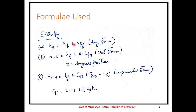Hence, you do not see X in the formula for dry steam. For superheated steam, the formula is HG plus CPS into the difference in temperatures, where CPS is the specific heat of steam, usually taken as 2.25 kJ per kg Kelvin, T superheated being the superheated steam temperature, and TS being the saturation temperature. These are the formulas for enthalpy which we are using.